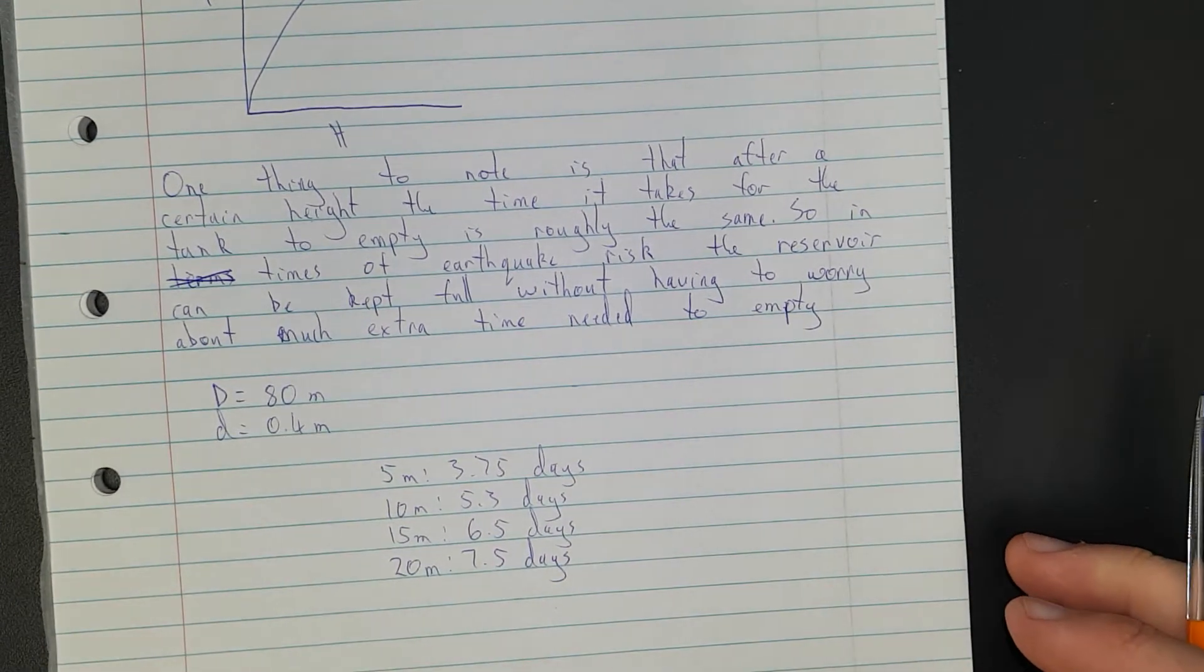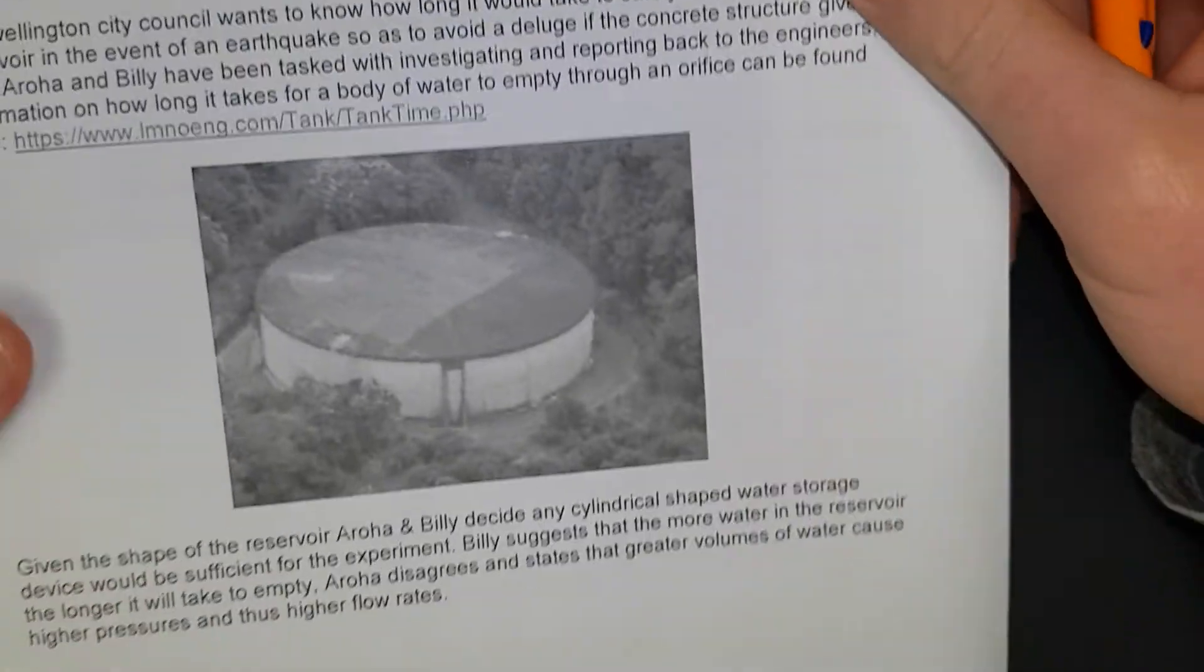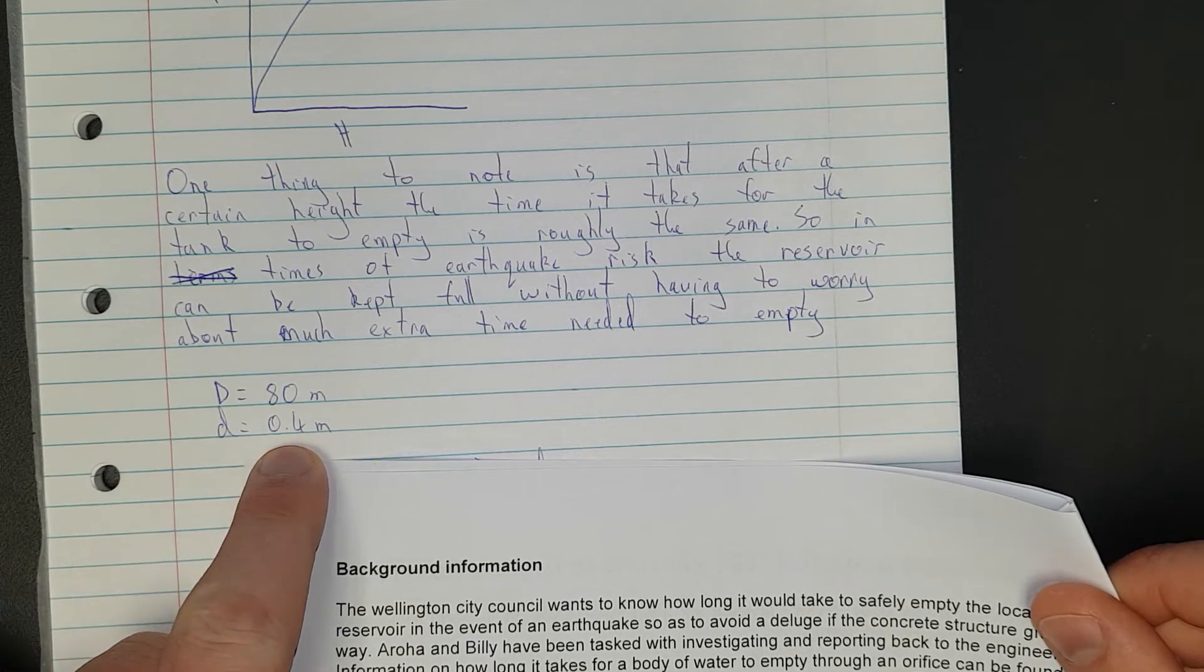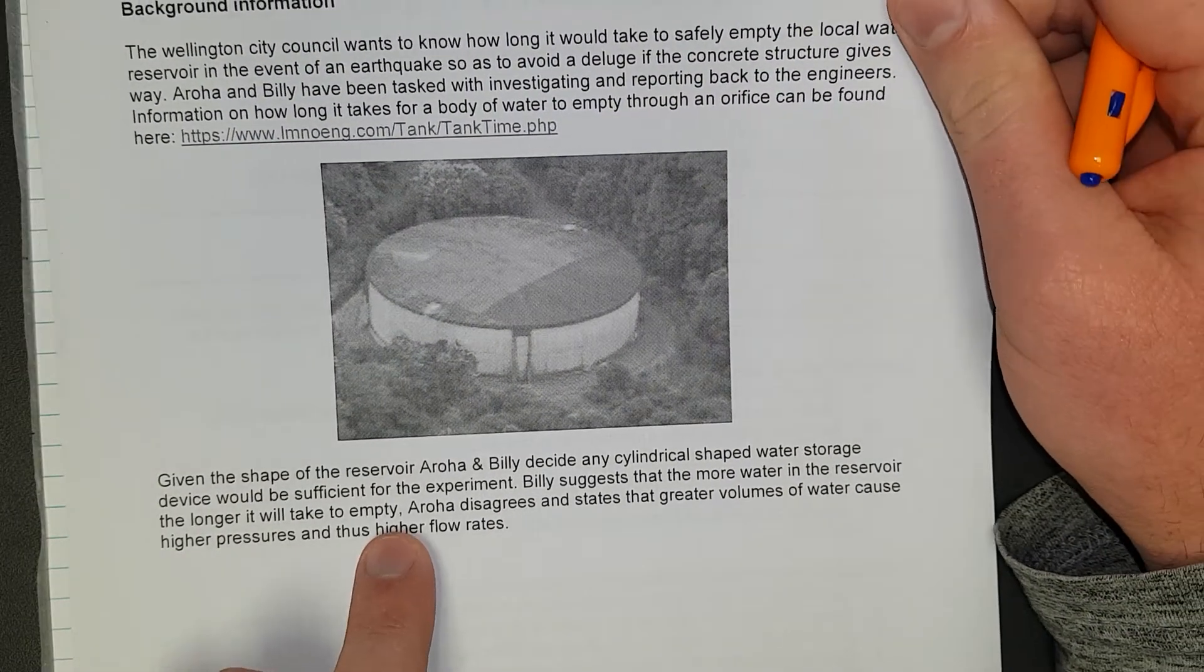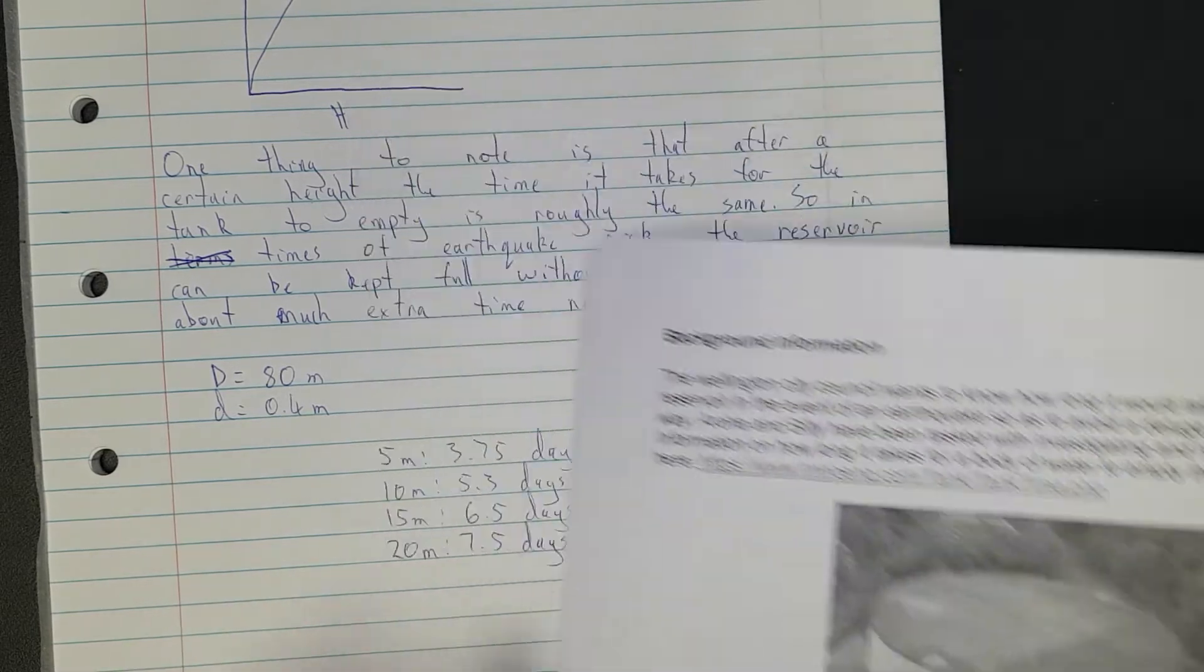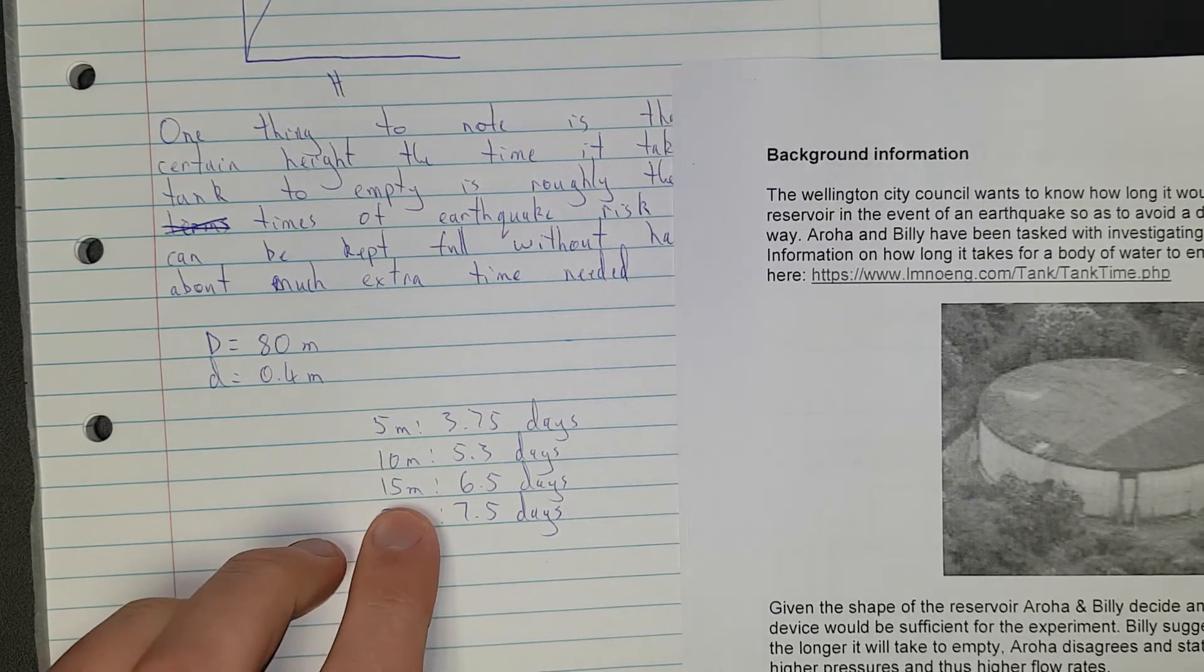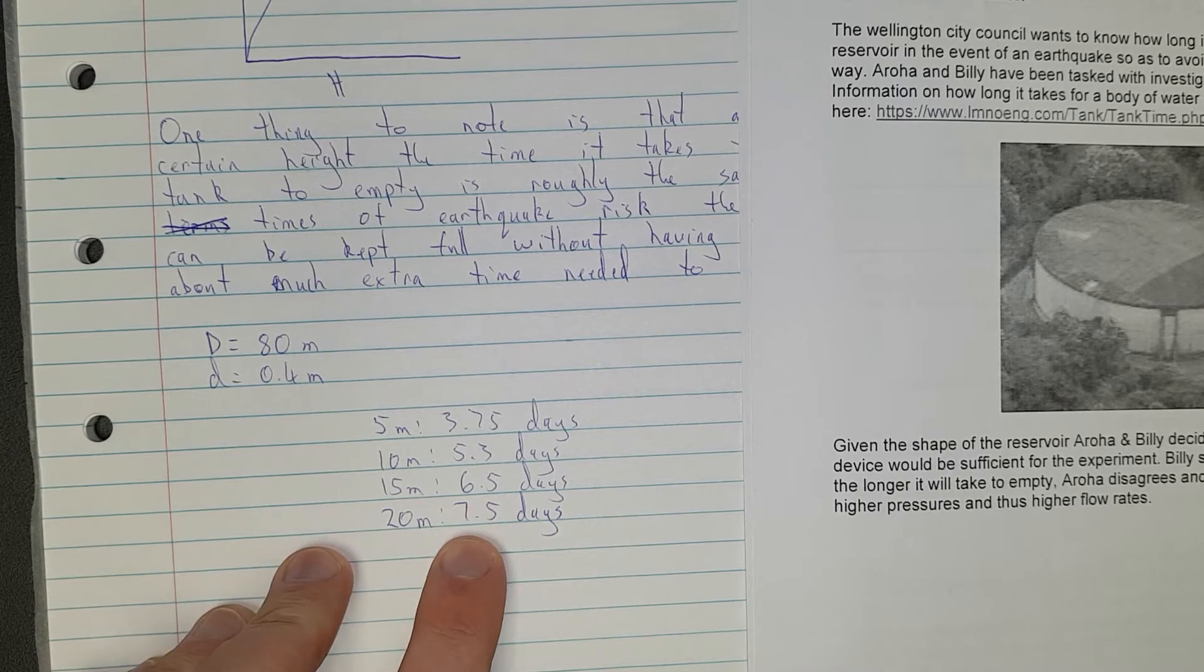And I just had a few back of the envelope calculations. If you have a diameter of 80 meters, so if you go back to the context, the context was how long it was going to take one of these fellows to empty out. I just guesstimated 80 meters across is probably roughly what it would be. A diameter of the hole with a pipe of 0.4 meters, which is a decent sized pipe, which seems about fair enough. And I plugged it into the equation. So if you have this tank, the water level at five meters, you're getting 3.75 days to empty. At 10 meters, 5.3 days. At 15 meters, 6.5 days. And at 20 meters, 7.5 days. So if you add an extra quarter, if the thing is completely full at 20, if it's three quarters full, it only takes one less day. So you're better off just having the whole thing completely full.